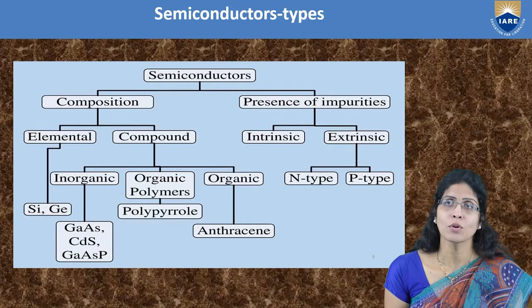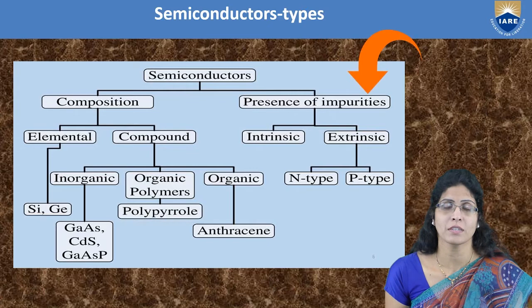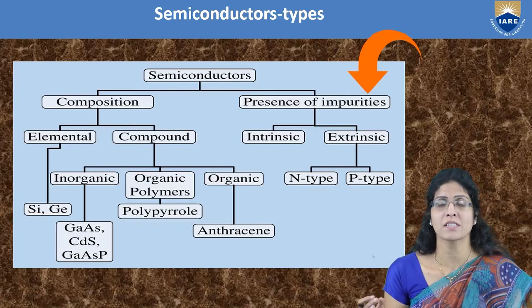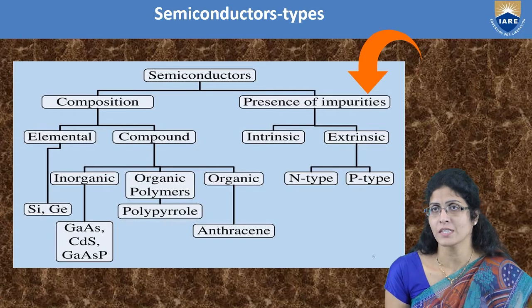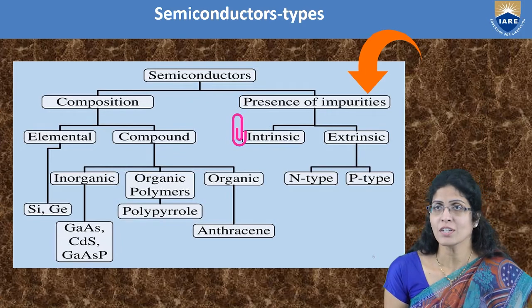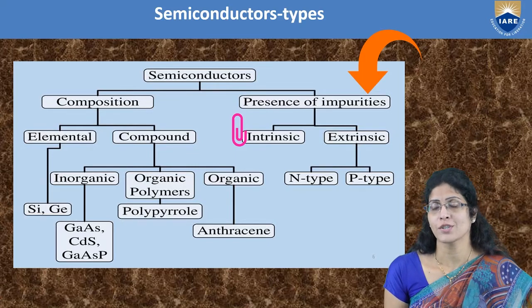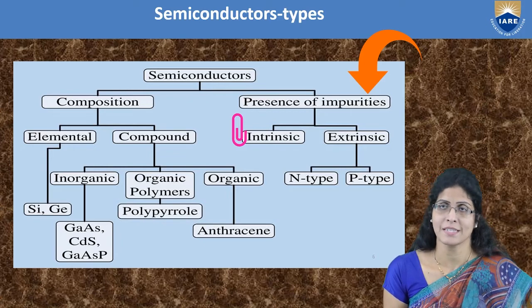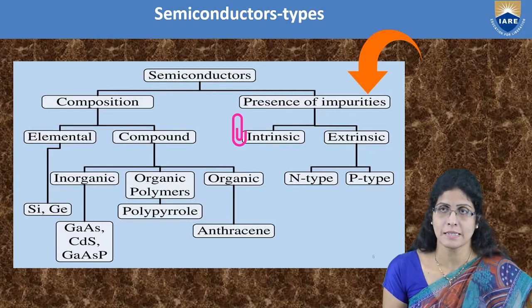In your syllabus you have only the classification based on presence of impurities, which gives intrinsic and extrinsic semiconductors. Our current topic is intrinsic. In coming video lectures we will look into the in-depths of extrinsic semiconductors, carrier concentrations, and Fermi level distributions in n-type and p-type. So let's continue with intrinsic semiconductors.